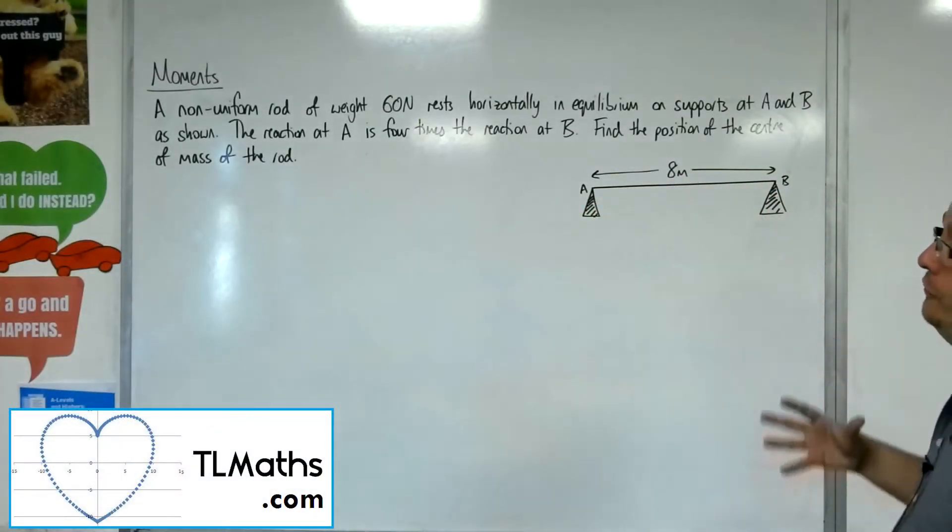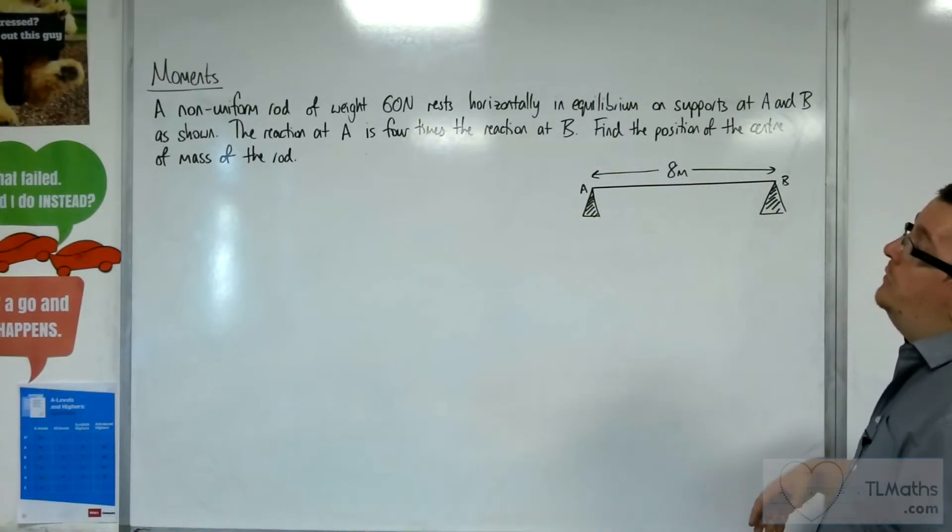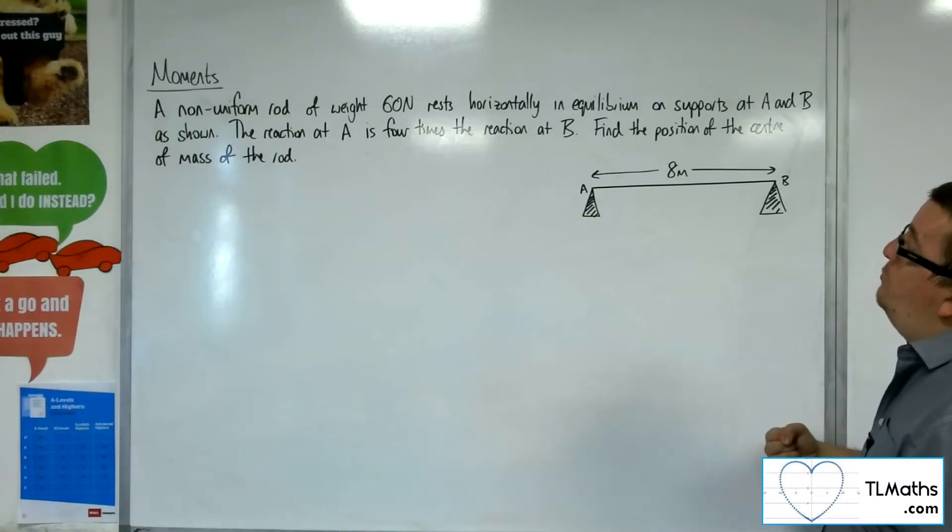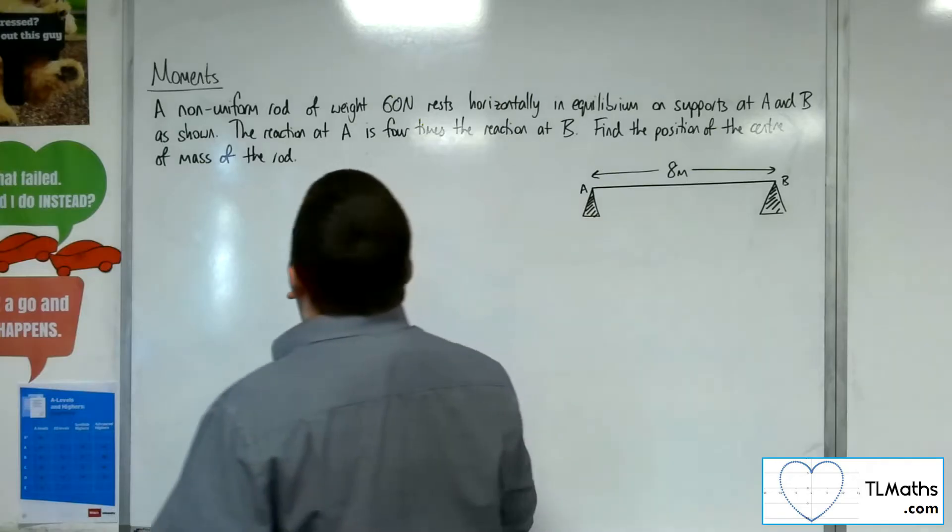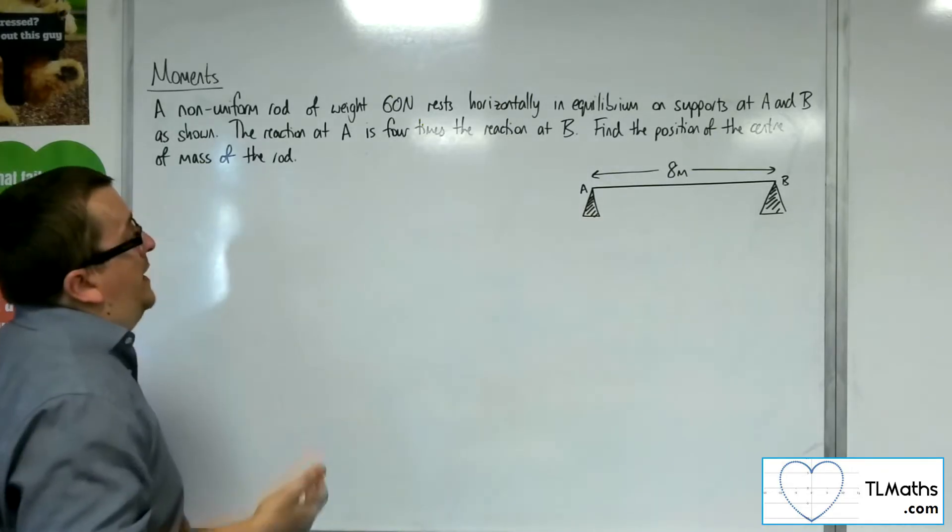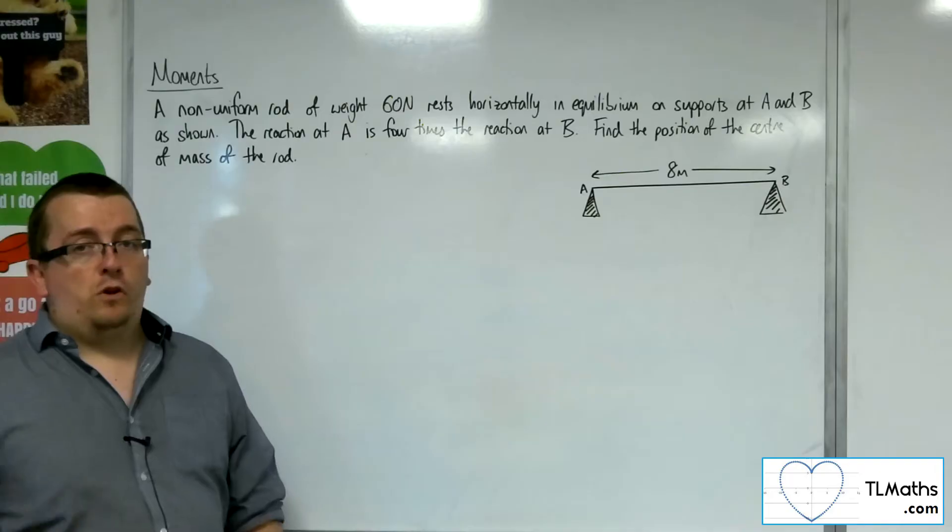So in this video we've got a non-uniform rod of weight 60 newtons rests horizontally in equilibrium on supports at A and B as shown. The reaction at A is four times the reaction at B. Find the position of the centre of mass of the rod.